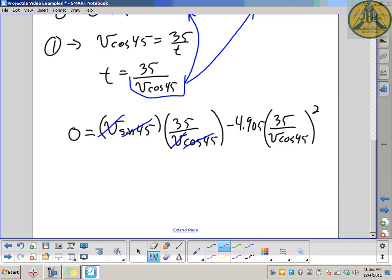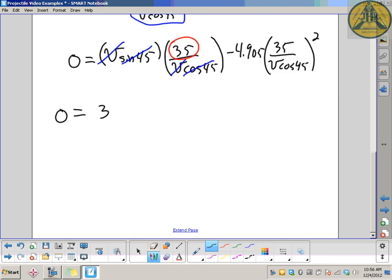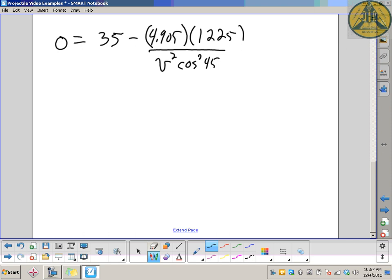So, what you're left with of that first term on the right side is just 35. So, simplify it again. 0 equals 35 minus 4.905, I'll leave that out in front. And I'll work out what 35 squared is. 1225 on the bottom. It's v squared cos squared 45. Looks a little messy, but it's actually fairly easy to solve now at this point. Bring the 35 over. Negative 35 equals negative, multiply those top numbers together.